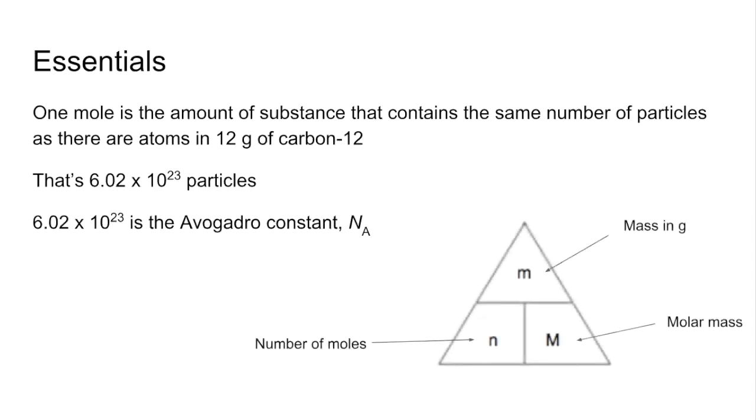And there's the formula triangle that links all of that together. So if you want to calculate the number of moles it's mass in grams over molar mass. If you want to calculate the mass you would need it's moles times molar mass. And if you want to calculate the molar mass of something it's mass over moles.